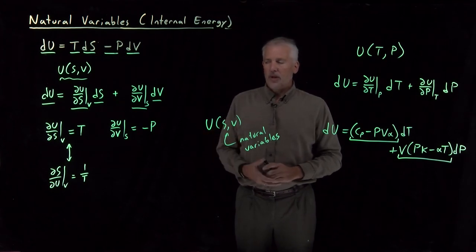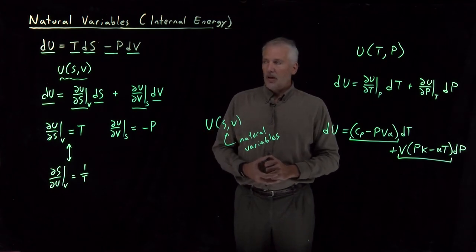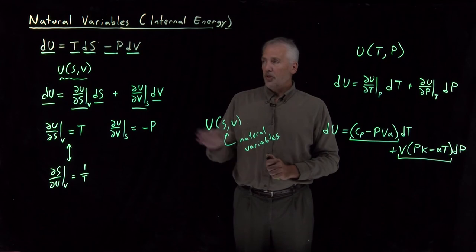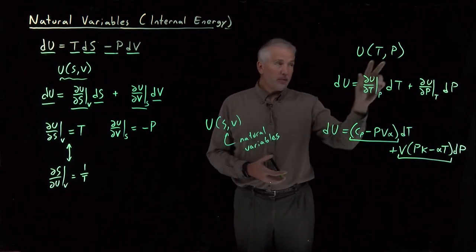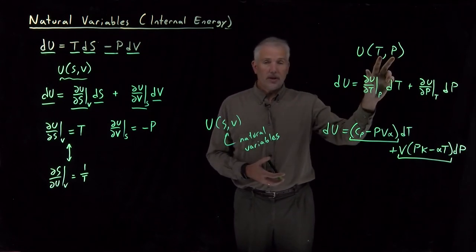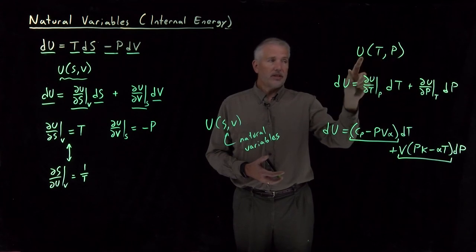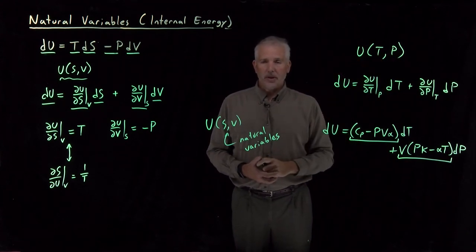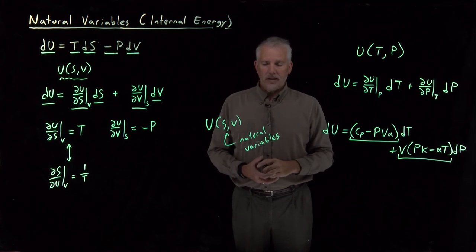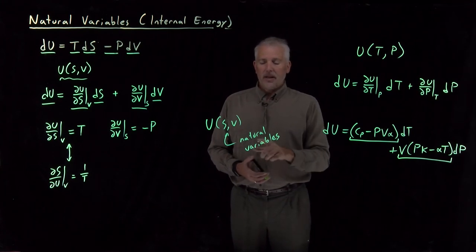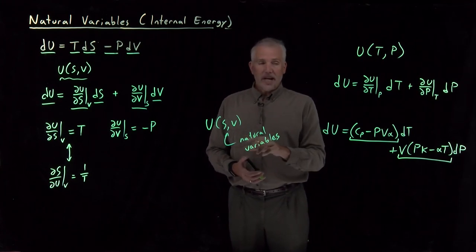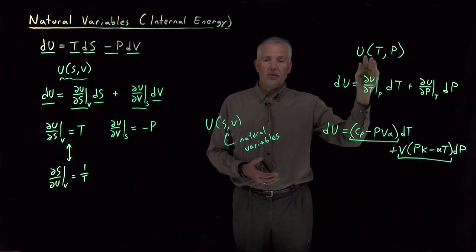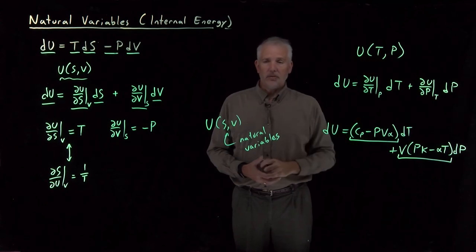For now, we'll note that S and V are the natural variables of the internal energy. If we want to work with temperature and pressure, it's easier to work not with internal energy but with other thermodynamic properties. That's where we're heading next — defining properties whose natural variables might be T and P, T and V, or other combinations.